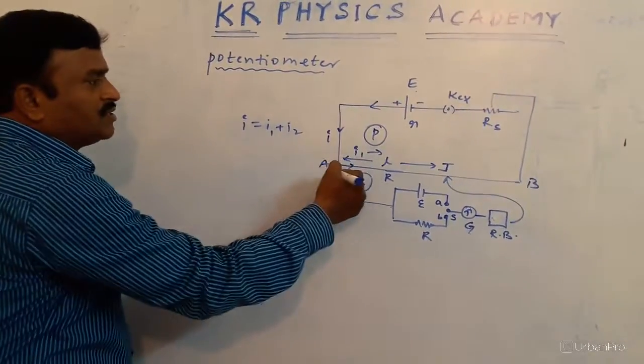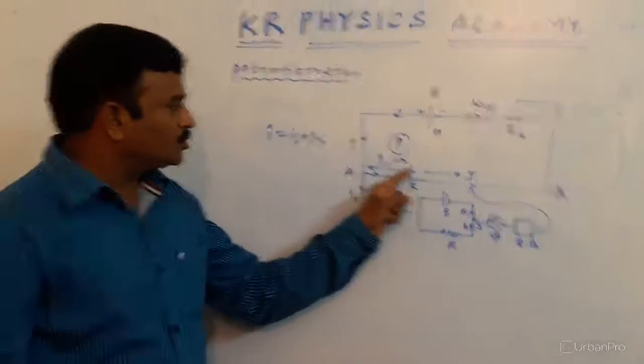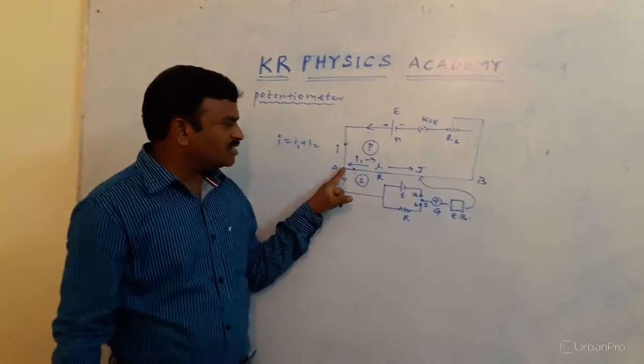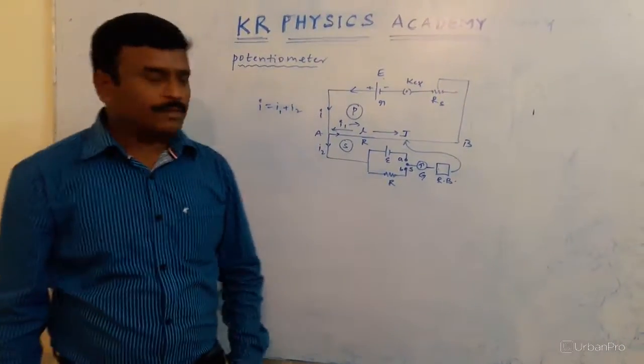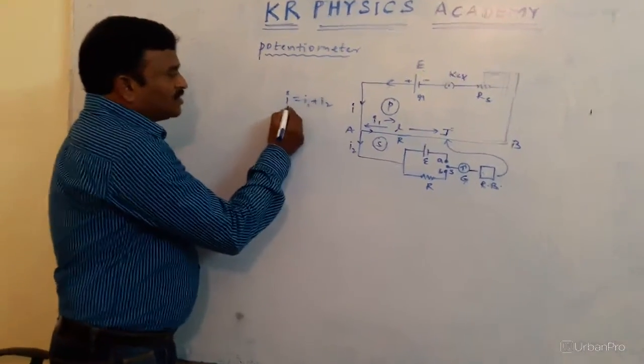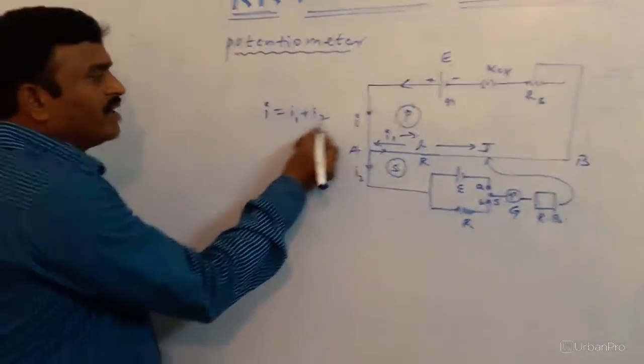The current which is coming from the source cell splits into two parts: I1 and I2. I1 current is passing through the wire, I2 current is passing through the secondary circuit. Again, by Kirchhoff's first law, I is equal to I1 plus I2.